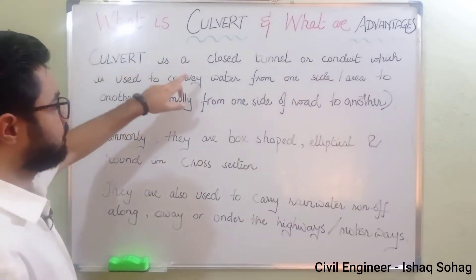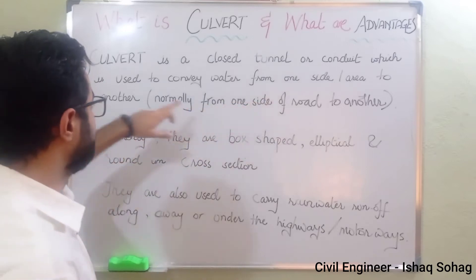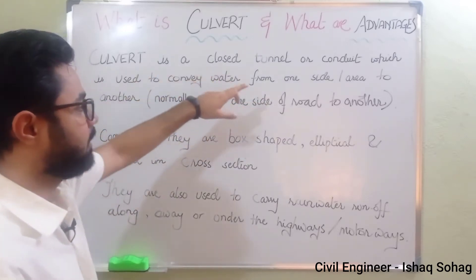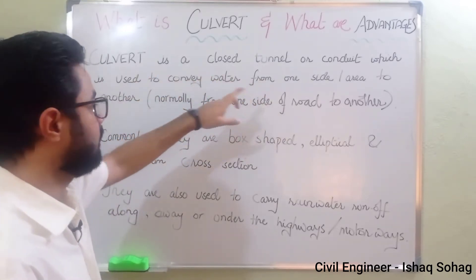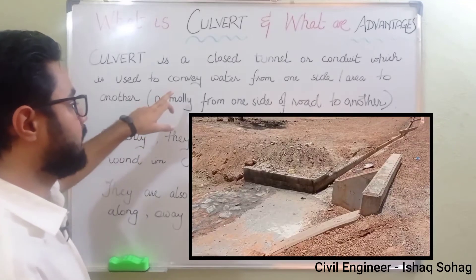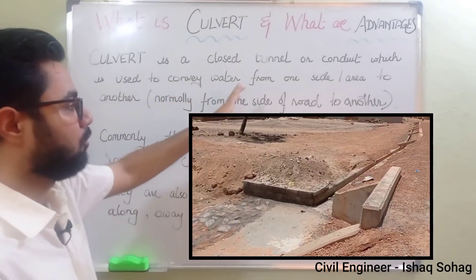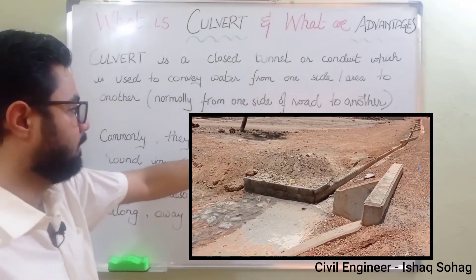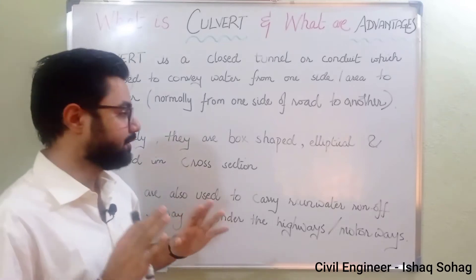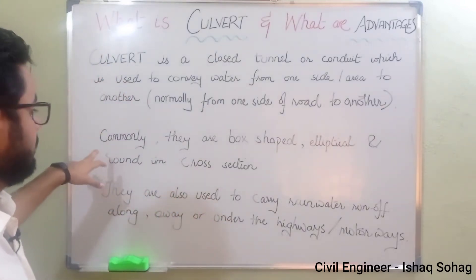A culvert is a closed tunnel or conduit which is used to convey water from one side or area to another side. Normally it is used to carry water from one side of the road to the other side. It comes in different shapes, and now we are going to talk about those shapes.